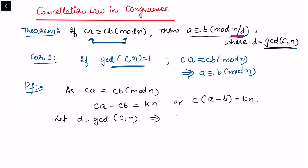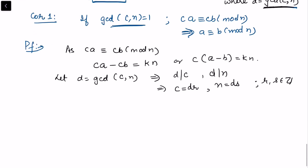Since d is the gcd of c and n, d divides c and d divides n. We can write c as d times r and n as d times s, for some integers r and s. Substituting these values and noting that the greatest common divisor d has been factored out, we can also note that the gcd of r and s is equal to 1.